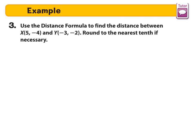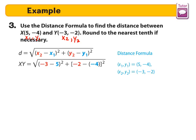Example 3, use the distance formula to find the distance between X, which is (5, -4), and Y, which is (-3, -2). Round to the nearest tenth if necessary. So let me make this x₁, this will be x₂, y₁, y₂. So our distance formula, the square root of (x₂ - x₁)² plus (y₂ - y₁)².